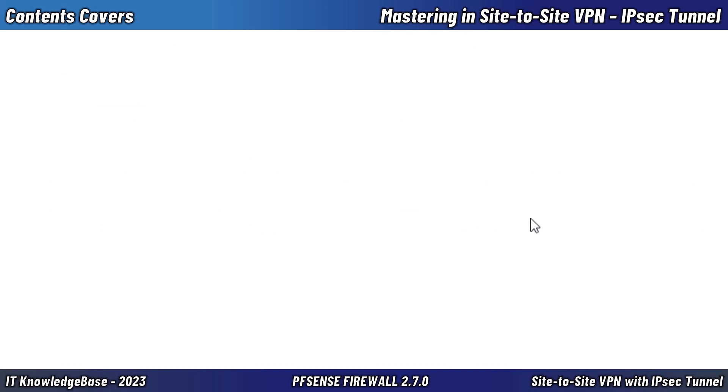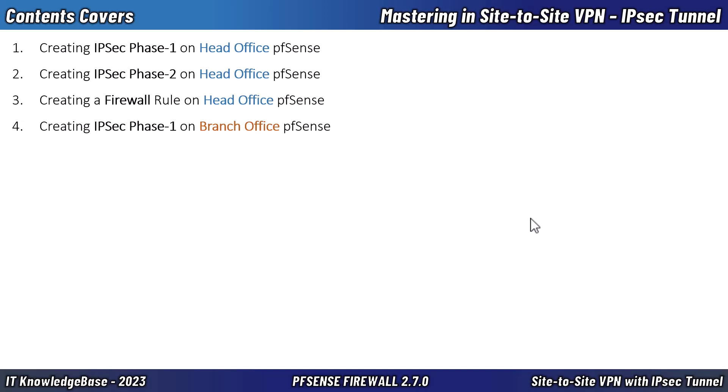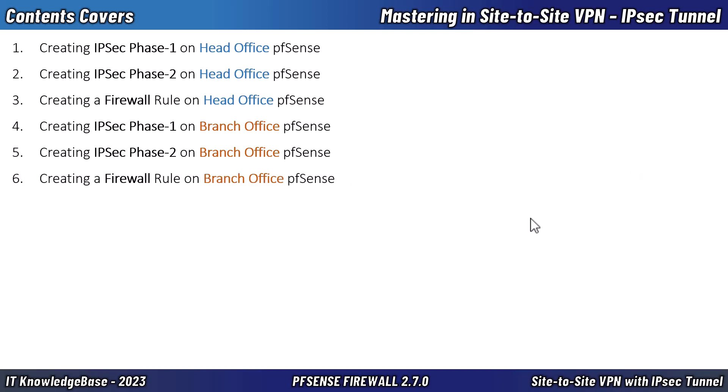The lecture covers: first, create IPSec Phase 1 on head office pfSense; then create IPSec Phase 2 on head office pfSense; then create a firewall rule on head office. Next, move to branch office and create IPSec Phase 1, then Phase 2, then a firewall rule on the branch office pfSense firewall.